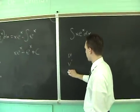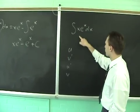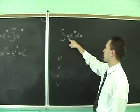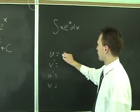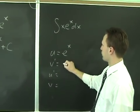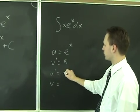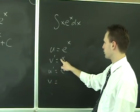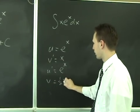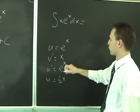If instead, if I went with this for the v-prime and this for u, watch what happens. You have e to the x is u, and v-prime is x. U-prime is still e to the x, but v is the anti-derivative of this, so it's one-half x squared.